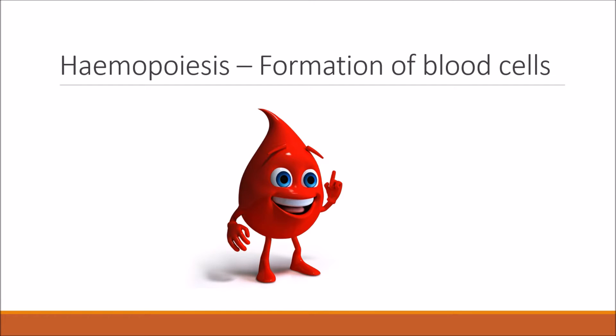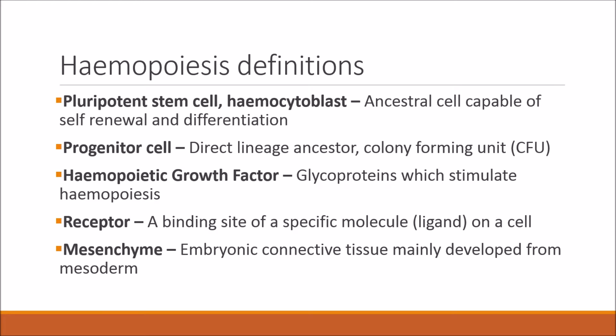Haemopoiesis is the formation of blood cells. A pluripotent stem cell, or haemocytoblast, is an ancestral cell capable of self-renewal and differentiation. A progenitor cell is a direct lineage ancestor, basically a colony forming unit, often abbreviated to CFU. A haemopoietic growth factor is a glycoprotein which stimulates haemopoiesis. A receptor is a binding site of a specific molecule or ligand on a cell. Finally, mesenchyme is embryonic connective tissue mainly developed from the mesoderm.